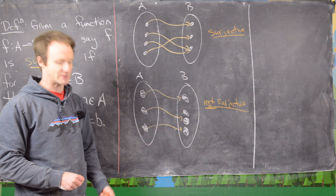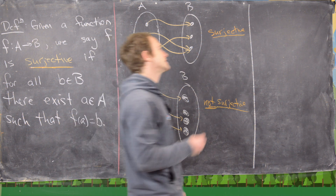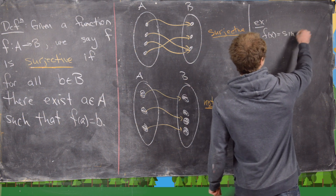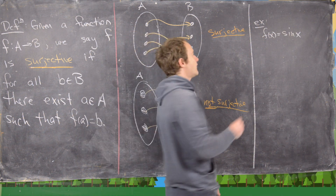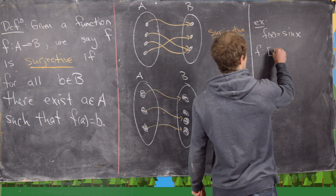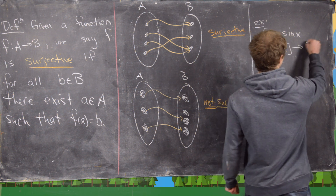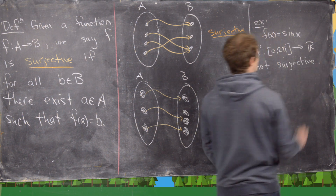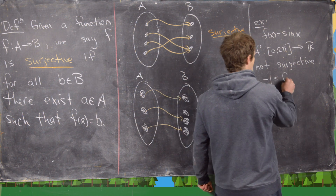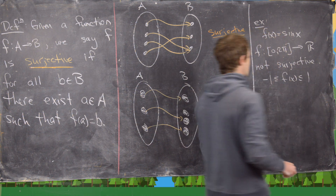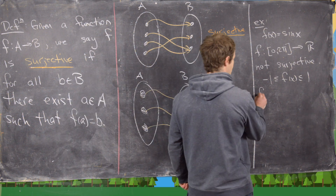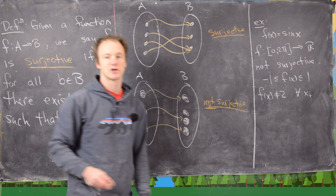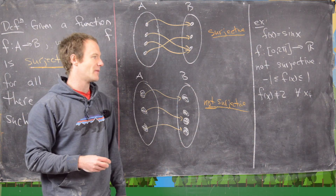Now we can see some examples from calculus. Consider the function f(x) = sin(x). If we consider this as a function from the interval [0, 2π] to the real numbers, this is not surjective. We know that because f(x) is always between -1 and 1, so for example f(x) is not equal to 2 for all x. In other words, 2 is an element of the codomain that is missed.